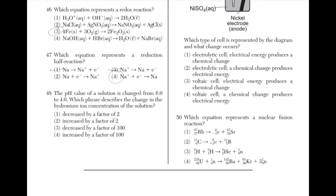The pH value of a solution is changed from 6 to 4. Which phrase describes the change in the hydronium ion concentration? When the pH decreases, the hydronium ion concentration increases. Choice 2 is a trick answer — the concentration will not have increased by a factor of 2; it will have increased by a factor of 100, because 100 is 10 to the power of 2. The answer is choice 4.